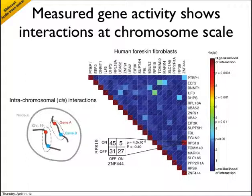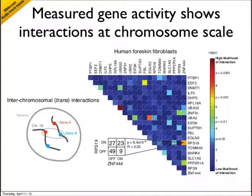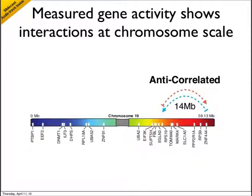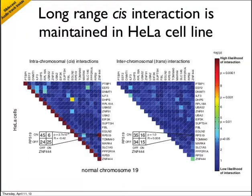In a primary fibroblast cell line, most gene pairs showed no interaction at the cis level. But there was the exception of RPS19 and ZNF444, which showed a strong anti-correlated behavior — meaning when one gene is on, the other is off. One could postulate that this is the result of a transcription factor that, when present, turns one gene on and keeps the other off. But when we look at the trans level, what was a strong anti-correlated behavior at the cis level is now a mild positive correlation, thus ruling out the cause being a trans factor. What was most striking is that these two genes are separated by 14 megabases along chromosome 19. This behavior was robust across biological replicates, as well as in the HeLa cell line on the normal copies of chromosome 19, where at the cis level we saw a strong anti-correlation and lack of this behavior at the trans level.